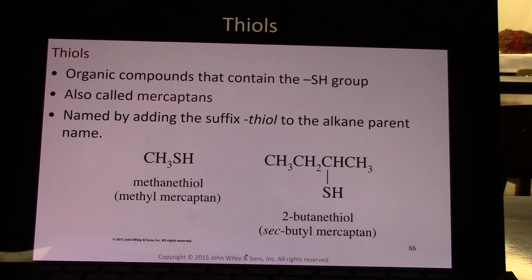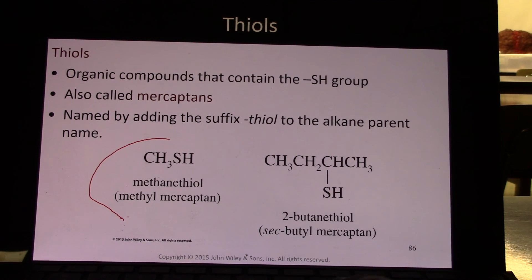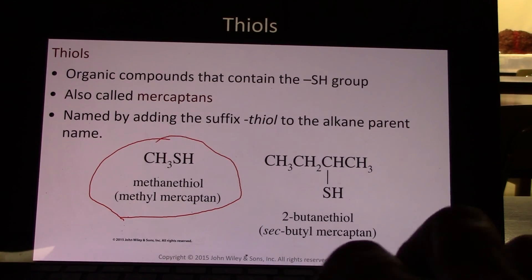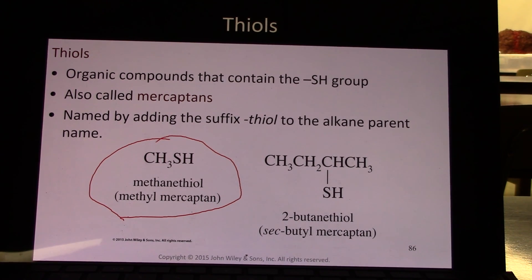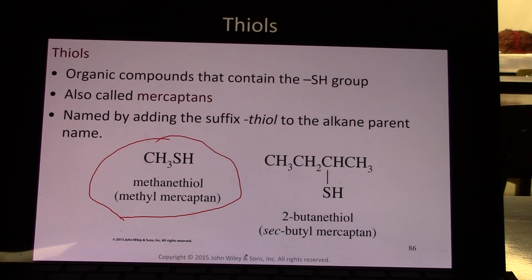Thiols are named by adding the suffix -thiol to the parent alkane. So methanethiol, butanethiol. 2-butanethiol is what's added to natural gas so you can smell if you have a leak. When gas from your stove smells, it's because this is added on purpose so that people can tell if there's a leak. Natural gas — methane, ethane, propane, and butane — has no smell, so without adding something stinky you have no idea if you have a leak, which can become an explosive problem. This is purposely added to natural gas so a person is immediately aware of a leak, because the human nose is extremely sensitive to sulfur compounds.